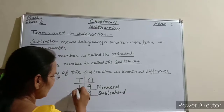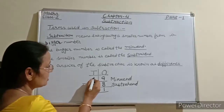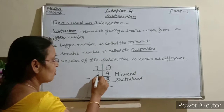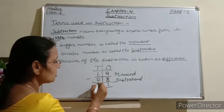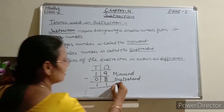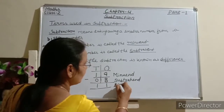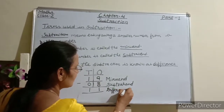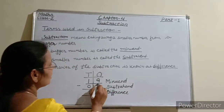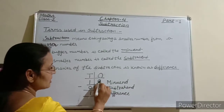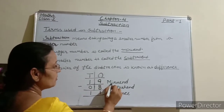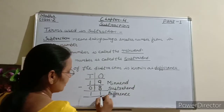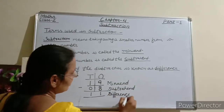So 9 minus 8 is 1. There is no number in the tens place, so we write 0. 1 minus 0 equals 1, so 11 is the difference. To summarize: 19 is the minuend, 8 is the subtrahend, and 11 is the difference.